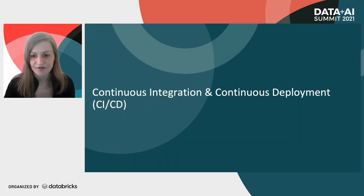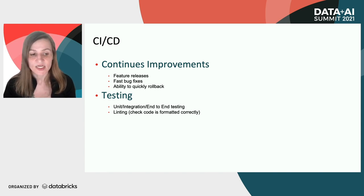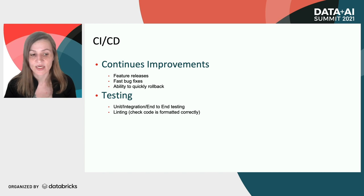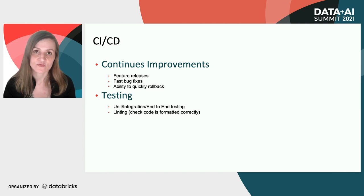CI/CD gives us continuous improvements — feature releases, fast bug fixes, and the ability to quickly roll back. It gives us the ability to test our code within those pipelines: unit testing, integration testing, and end-to-end testing. We can also perform linting within those pipelines, making sure that our code is in a nice format and conforms to our standards.